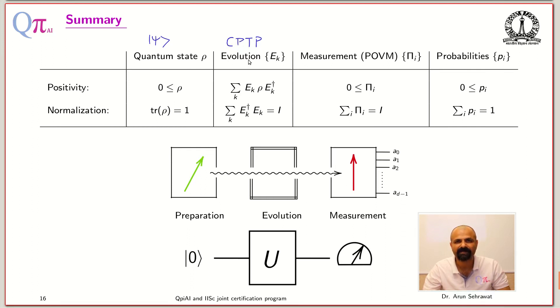CP means completely positive, which means if you apply this operation on a subsystem, you still get a positive operator, a positive state. That is the completely positivity condition. And this is your trace preserving condition TP, which means that after evolution if you perform any measurement you will get probabilities and they will add and give you one. Now this third box: measurement.